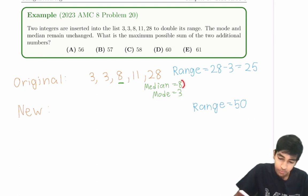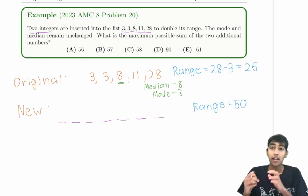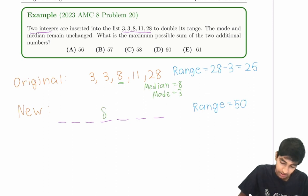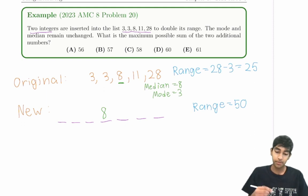But the median is 8? Well, notice that because we're inserting two integers to a sequence with five numbers already, the new sequence will be seven numbers long. And we know the median is 8. So the fourth term will be 8. Because when the numbers are written in increasing order, the median has to be 8.